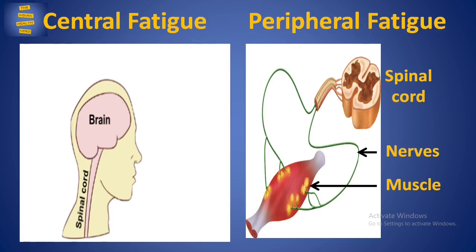Muscle does not contract on its own. For the muscle to contract, it has to receive signals from the brain, which pass through the spinal cord and then through the nerves before reaching the muscle. When fatigue arises in the brain or spinal cord, it is called central fatigue. When fatigue arises in the nerves or muscles, it is called peripheral fatigue. Central fatigue may be responsible for the neurological and psychiatric symptoms like lack of motivation and depression seen in overtraining.